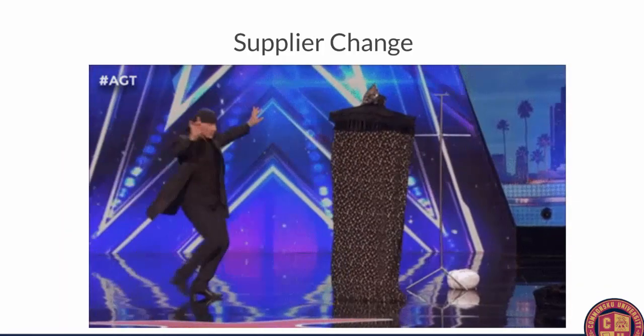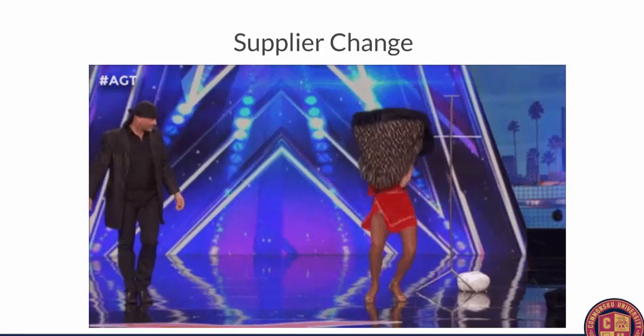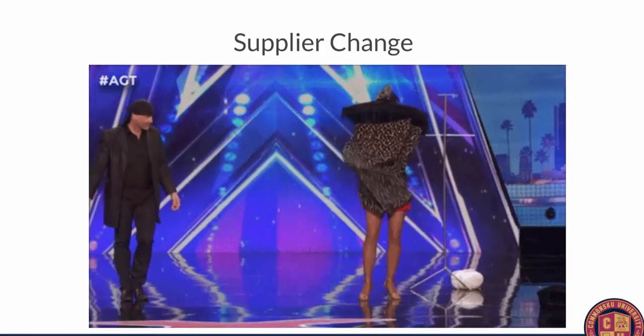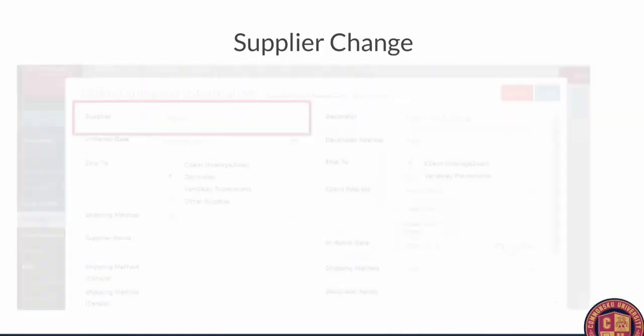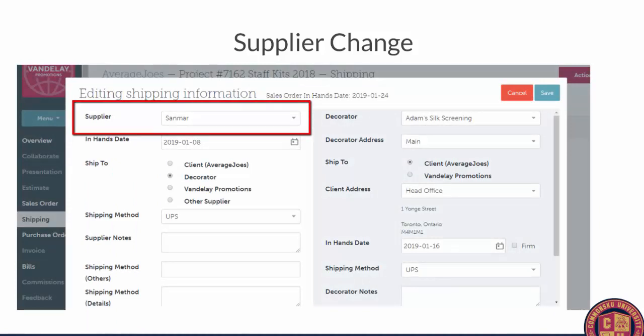Next is Supplier Change — kind of like a quick change artist. Sometimes you're creating an order and a supplier is out of stock and you need to change who the vendor is for that item. You can do that inside of the Shipping tab. When you click Edit on an item under the Shipping tab on a project, you can change who the vendor is in the first drop-down menu. I want you to err on the side of caution because the item number does need to be the same — you don't want to go from getting shirts to pants. You can change who the supplier is, and that will create the PO for whatever supplier you selected.